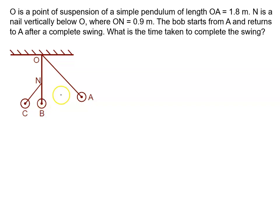O is a point of suspension of a simple pendulum of length OA equal to 1.8 meters. N is a nail vertically below O, where ON is 0.9 meters. This distance is given to us, that is 0.9 meters.